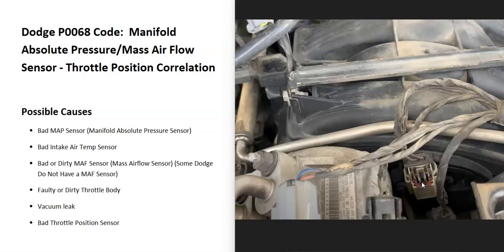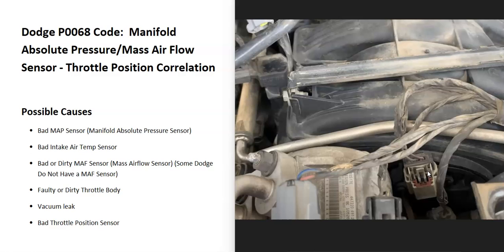The exact location of the MAP sensor will vary depending on the year, engine, and other factors, but it will be on the intake manifold somewhere. For example, on a 2004 Ram 1500 4.7-liter, it's located right at the front of the engine, right next to the air conditioning compressor.